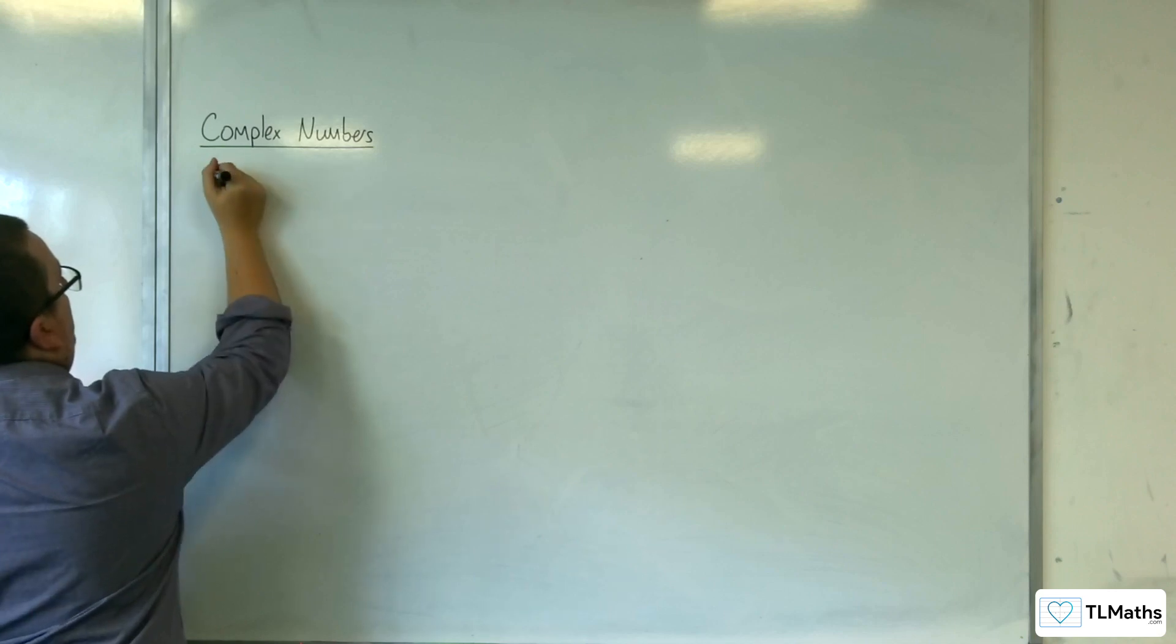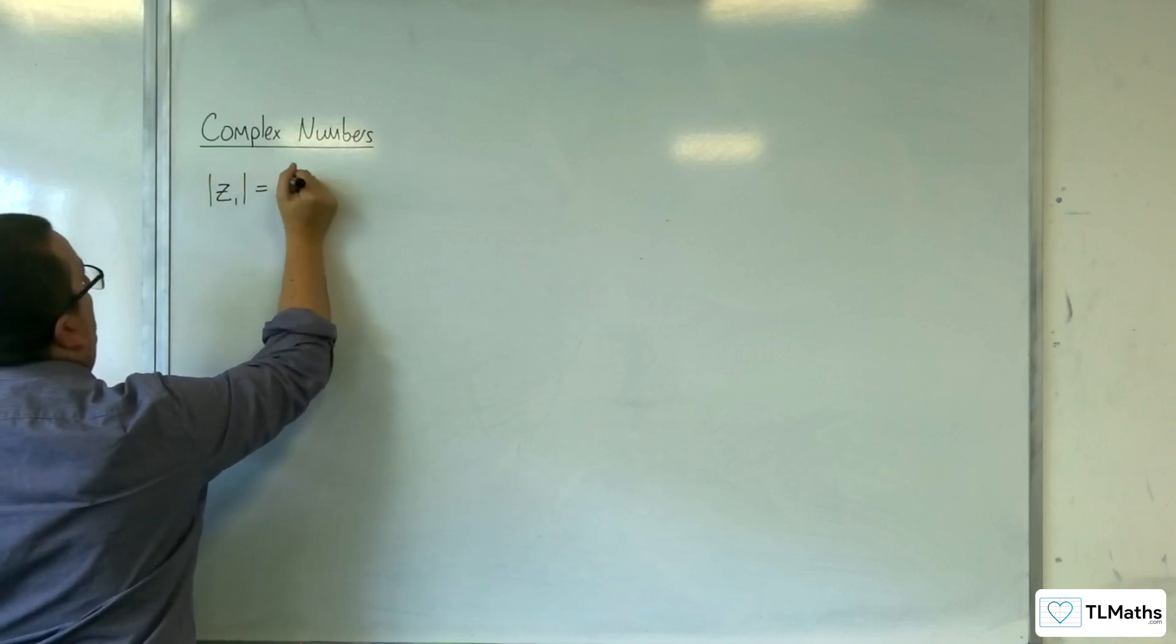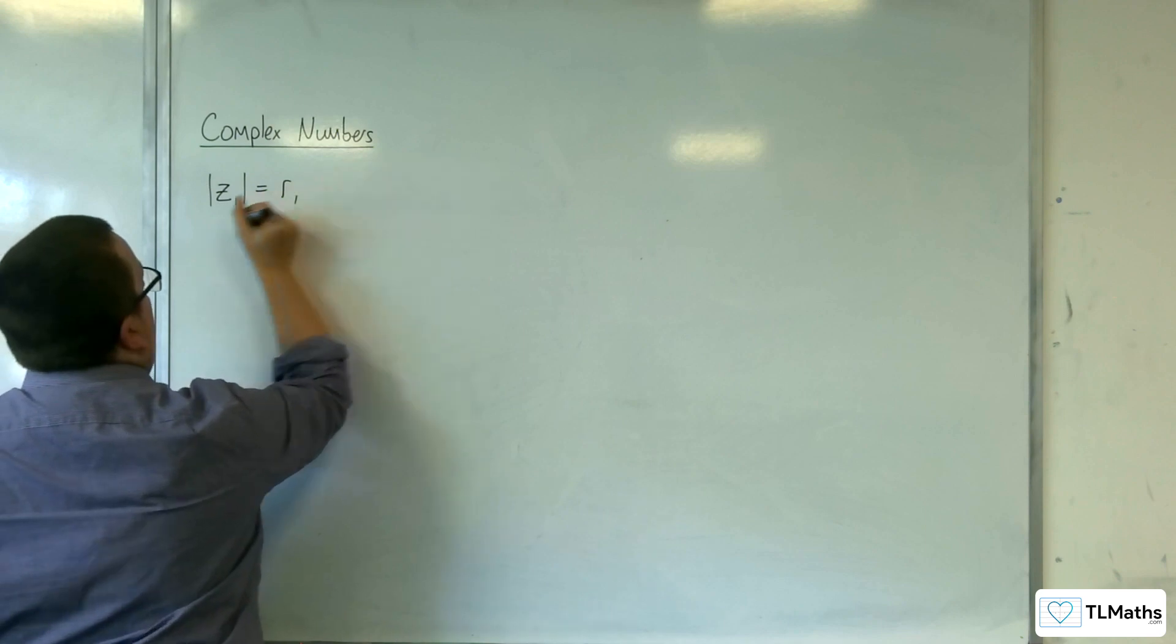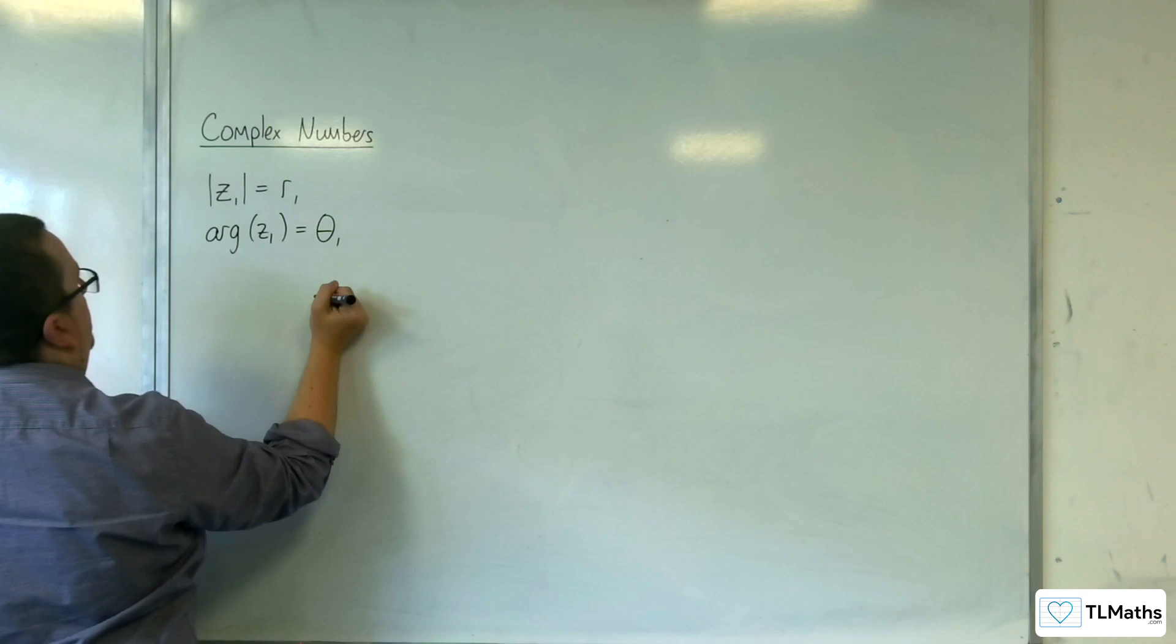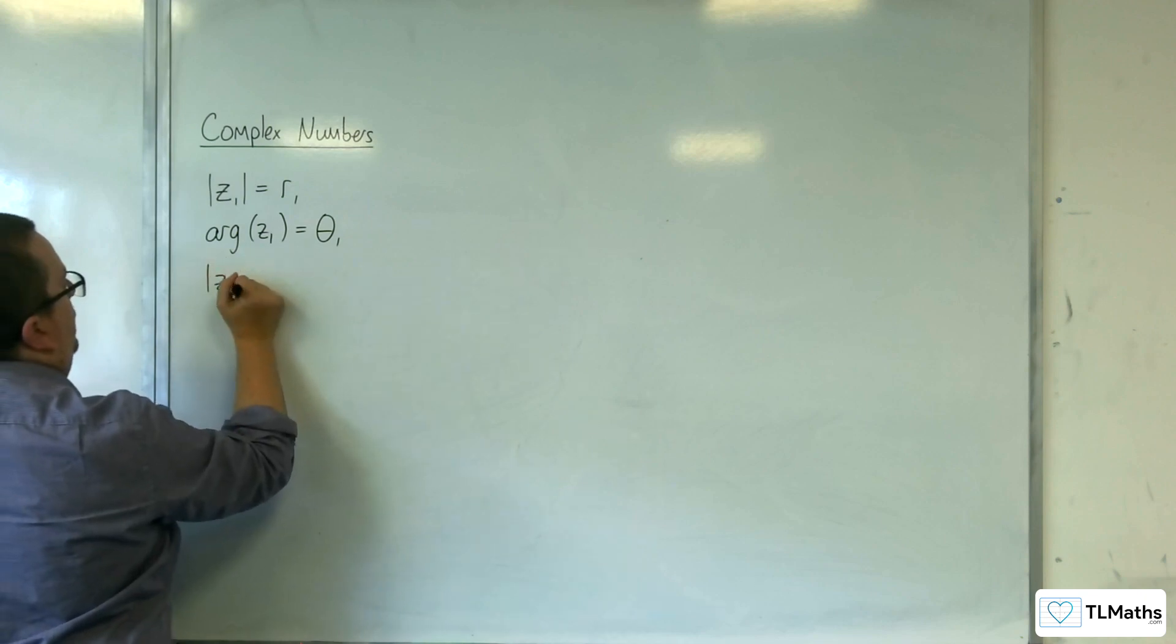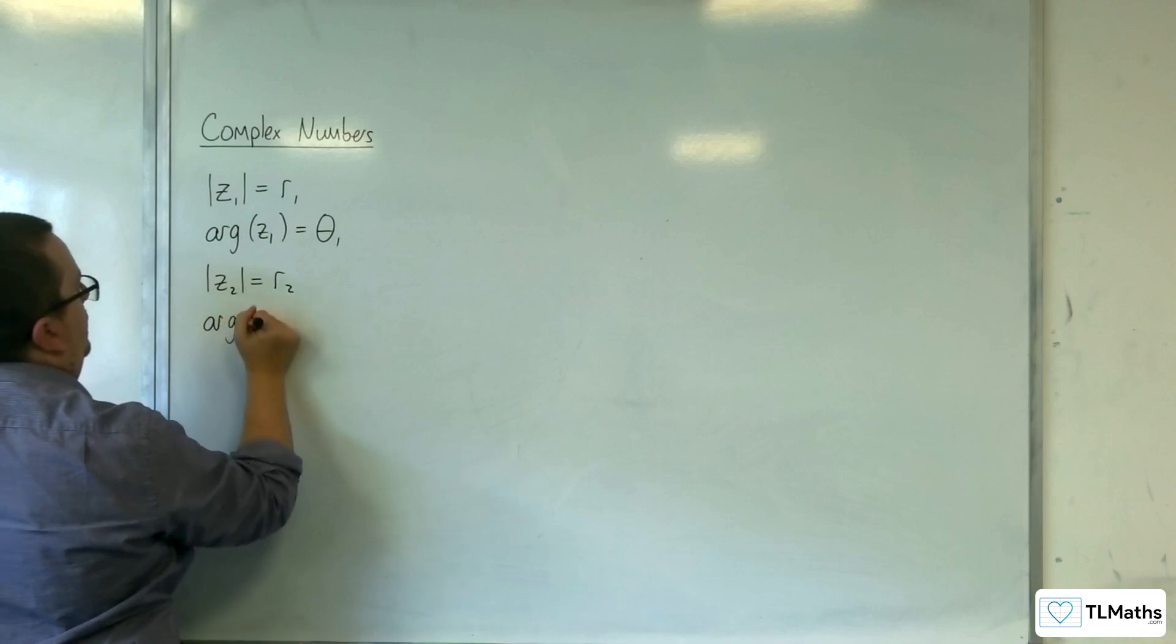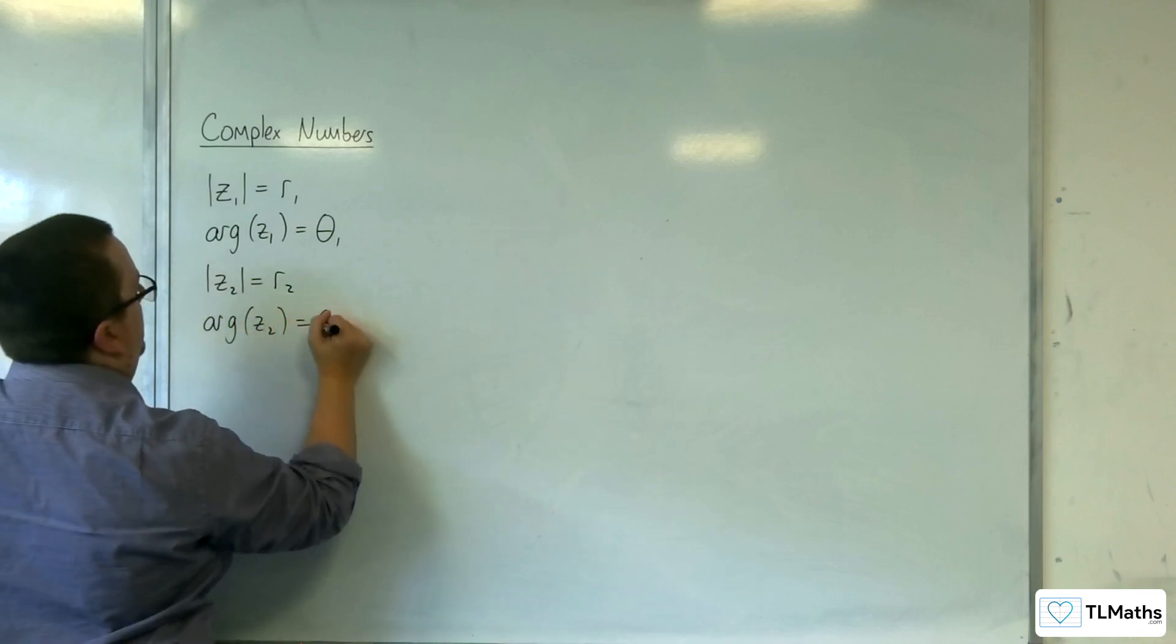Z1 has modulus R1 and argument theta 1. The modulus of Z2 will be R2, and the argument of Z2 will be theta 2.